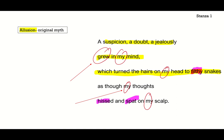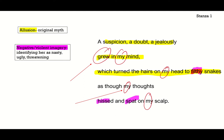In the pink, we have this negative, violent imagery: 'which turned the hairs on my head to filthy snakes as though my thoughts hissed and spat on my scalp.' She's really identifying herself with these nasty, ugly, threatening characteristics — this is how she's seen. The words she uses to describe herself tell us how she feels: filthy, hissed, and spat are nasty, ugly, almost animal. They're not very human.